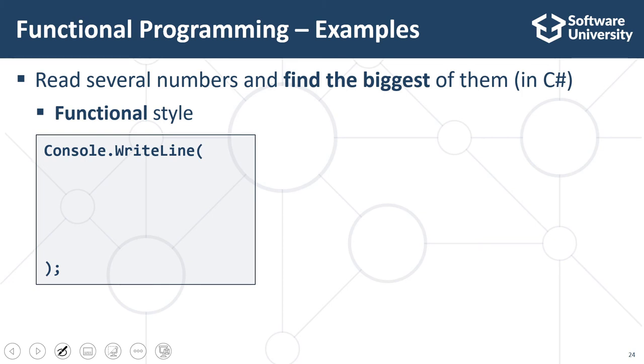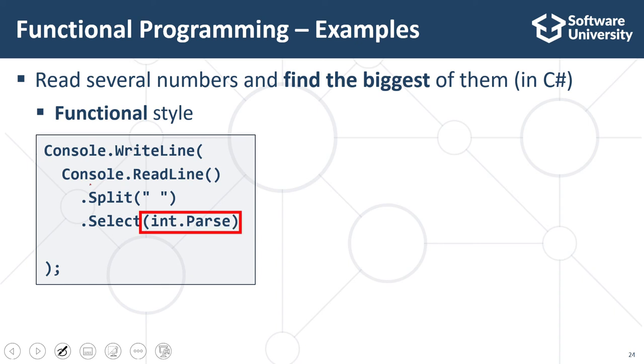First, we read the input text from the console by invoking a function, Console.ReadLine. Then, we split the result from the previous function, the input text, into space-separated elements, which are strings. Then, we parse each of these input strings to integer numbers using Select, which is the mapping function in C-sharp. It receives a sequence of strings and passes each element of the sequence to another function, which is, in this case, int.Parse. The result from this function is a sequence of integers. Finally, we find the biggest number from the list of numbers using the Max function.